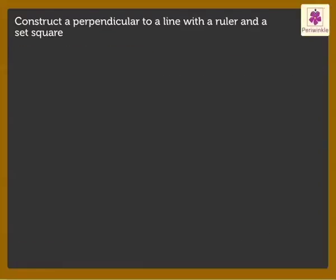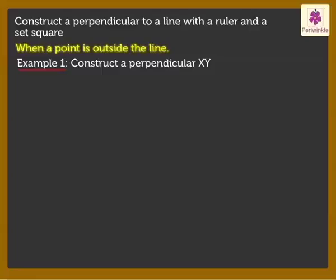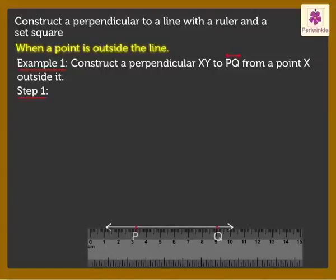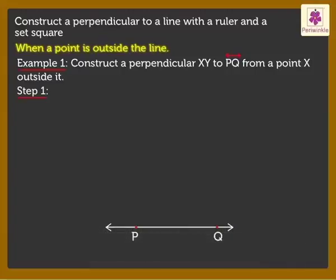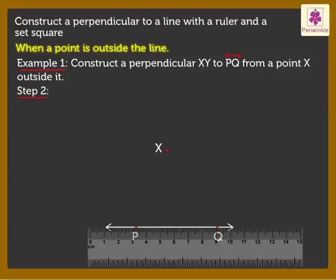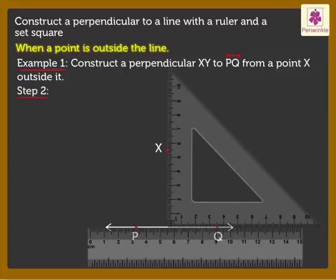Now let us look at how to construct a perpendicular when the point is outside the line. Construct a perpendicular XY to a Line PQ from a Point X outside it. Step 1: Draw Line PQ using a Ruler. Mark a Point X outside it. Step 2: Place the Ruler on Line PQ. Slide a Set Square along the Ruler till the vertical edge reaches Point X. Mark Point Y on Line PQ.